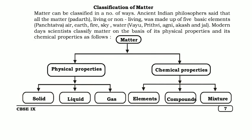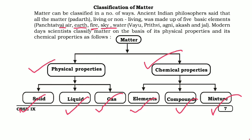How can we classify matter? Ancient Indian philosophers divided matter into living and non-living parts, made up of 5 basic elements or Panchatattva: air, water, earth, sky, and fire — that is Vayu, Jal, Prithvi, Akash, and Agni. In modern times, scientists classify matter on the basis of physical and chemical properties. Based on physical properties, matter is divided into solid, liquid, and gas. Based on chemical properties, it is divided into elements, compounds, and mixtures. These will be discussed in detail in the next video. This is the end of this video.